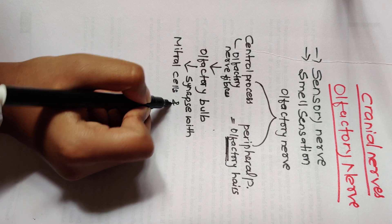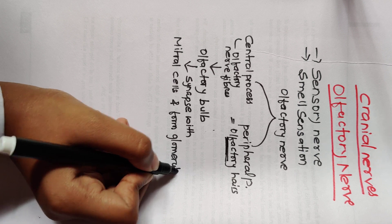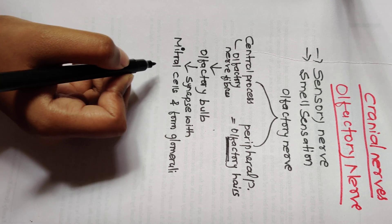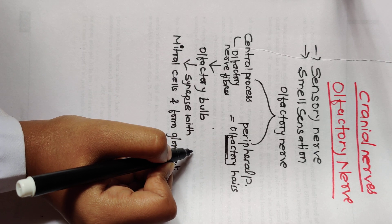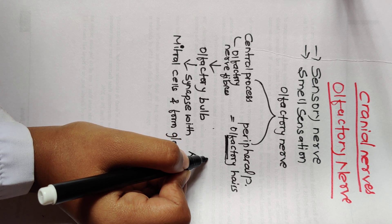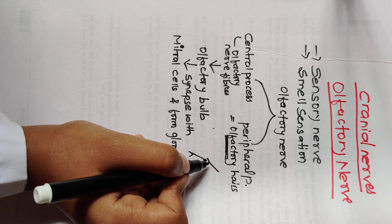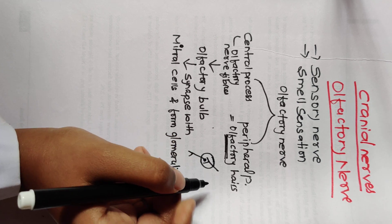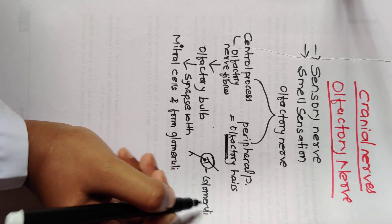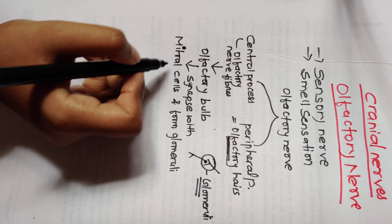After reaching the olfactory bulb, the fibers synapse with the mitral cells. In the olfactory bulb, there are cells named mitral cells where the synapse occurs, and this synapse forms glomeruli. So the olfactory nerve reaches the olfactory bulb, synapses with the mitral cells, and this synapse area is known as glomeruli.